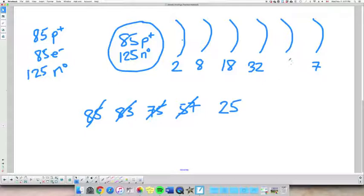Now can I put 32? No. Can I put 18? Yes, I have enough to put 18 because I have 25 still left. So if I put 25 minus 18, I'm left with 7. And that makes sense because I'm supposed to have 7 valence electrons. Astatine is supposed to have 7 valence electrons. So this works. So that's the way you're supposed to go about it.